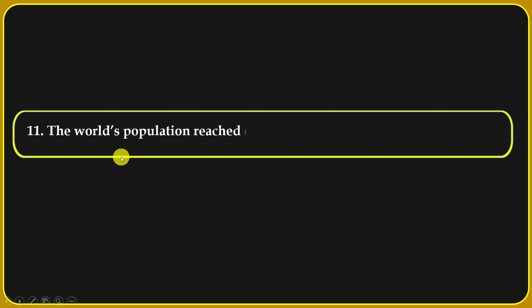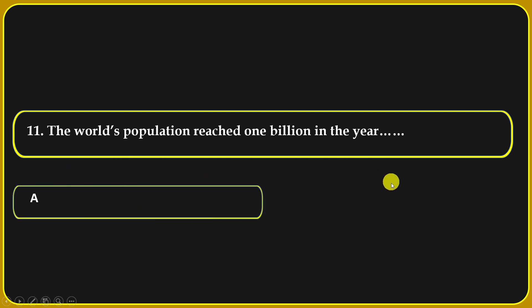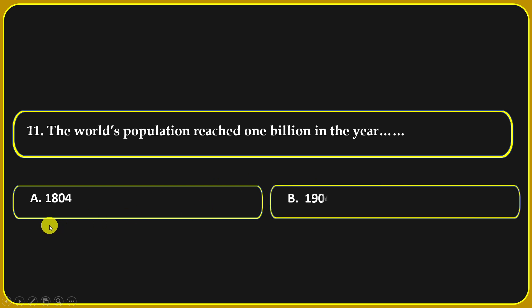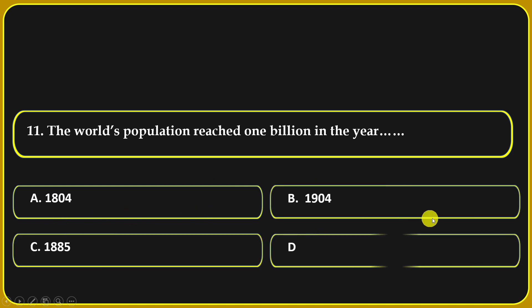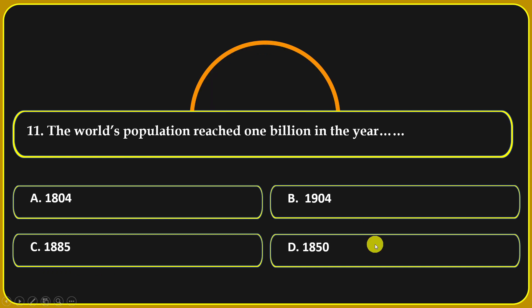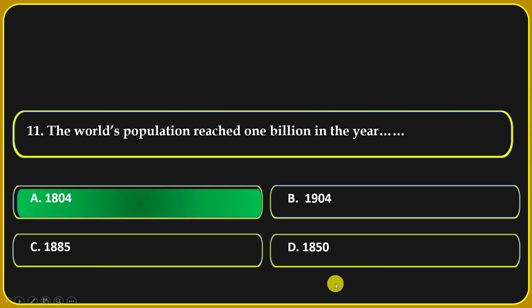The world's population reached 1 billion in the year: 1804, 1904, 1885, or 1850. 1804 is the correct answer.